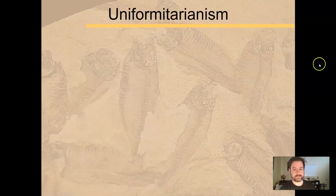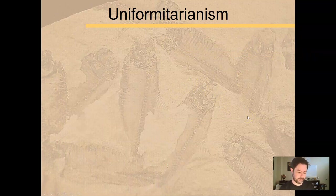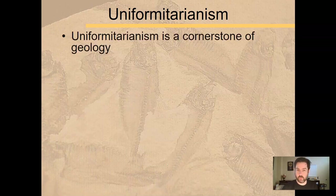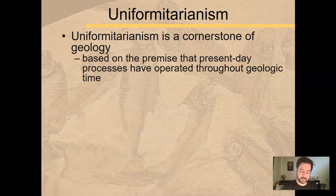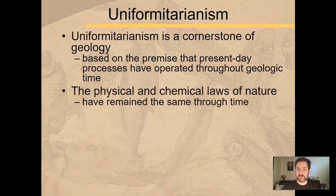So that's the geologic timescale. The thing that keeps us grounded in geology is this idea called uniformitarianism, which is a cornerstone of geology. It's not necessarily a theory per se, but it's the understanding. The premise of geology is that it's based on the present day processes have operated throughout geologic time. Earthquakes and volcanoes happen now, therefore they happened in the past. Plate tectonics is moving things around now. It's moved around in the past and vice versa. The physical and chemical laws of nature have remained the same through time. Physics has been physics forever. Chemistry is chemistry.